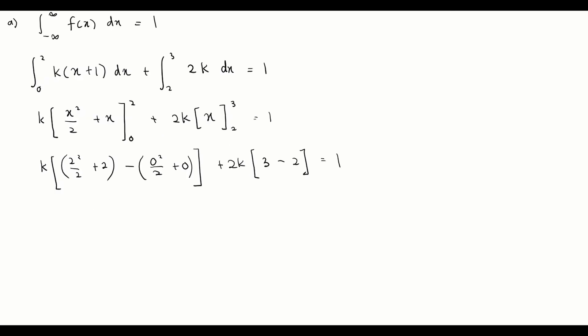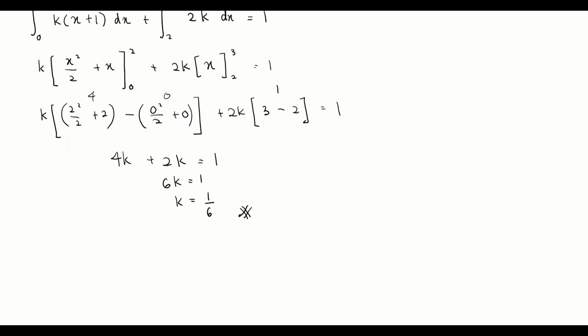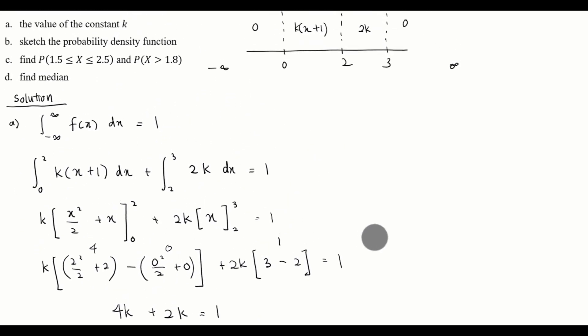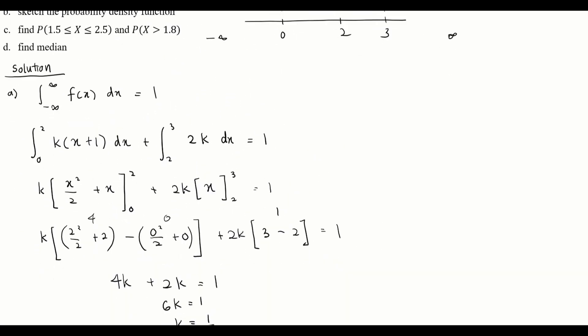So we have 4k + 2k = 1, which gives 6k = 1, therefore k = 1/6. That is the answer for part (a). For part (b), we want to sketch the probability density function.